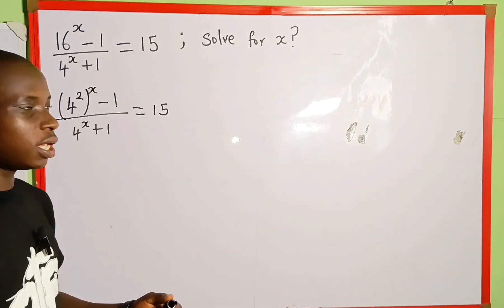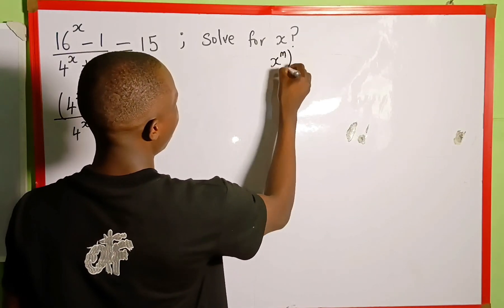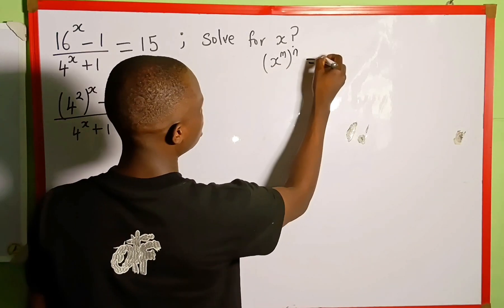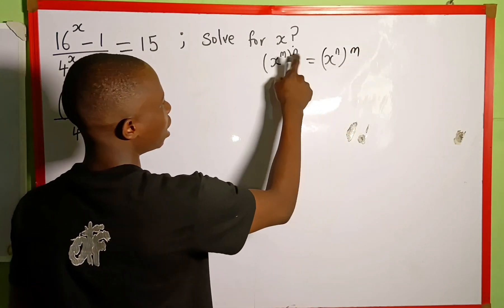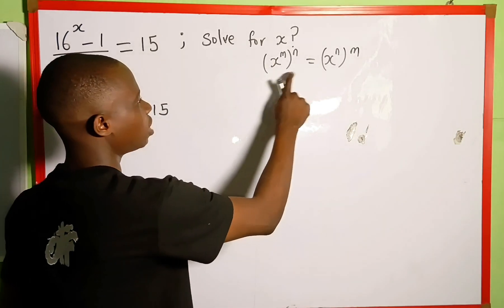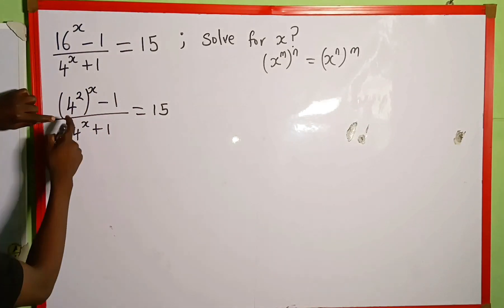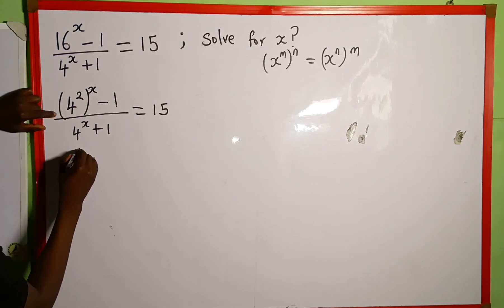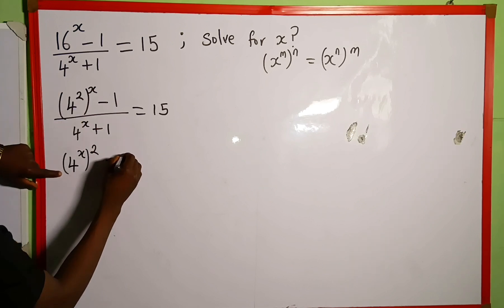The next thing we are going to recall is: when we have x raised to the power of m, to the power of n, this is the same as x raised to the power of n, to the power of m. We can just switch the powers. So we are going to apply this property here, and rewrite this as 4 raised to the power of x, raised to the power of 2. We just switch the power, then minus 1.